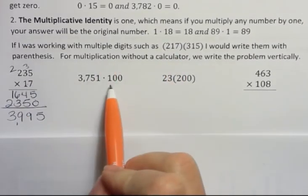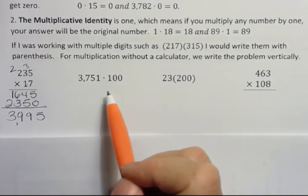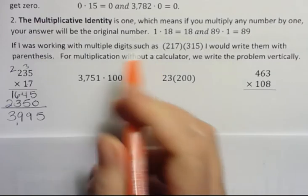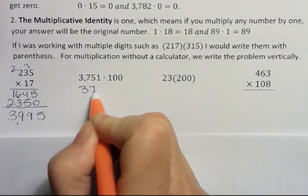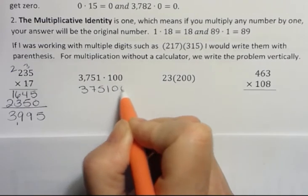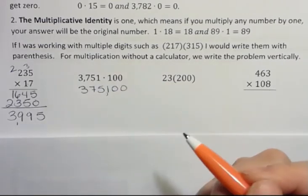What about when I'm multiplying by 100? When you multiply by 100, all you have to do is add the two zeros to the end. This is going to be 3, 7, 5, 1, the original number with two more zeros on the end. It makes it really easy to do.